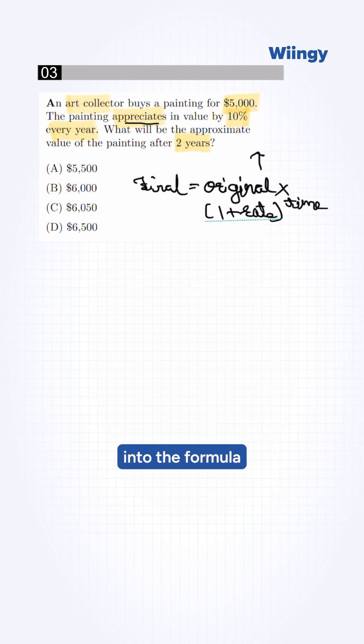Putting the values into the formula, it will be original is 5,000 times 1 plus rate will be 10%. And 10% in decimal will be 10 upon 100, which is 0.1.